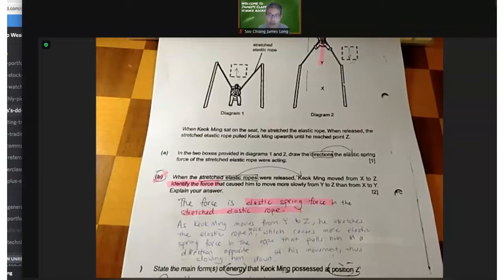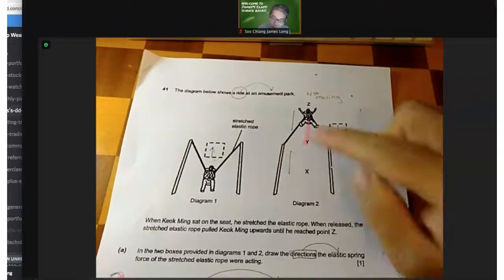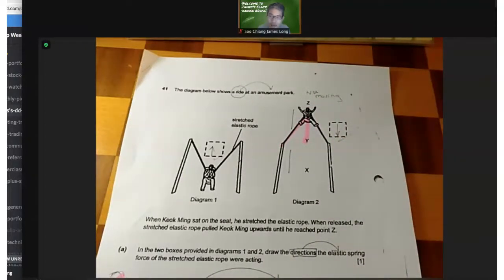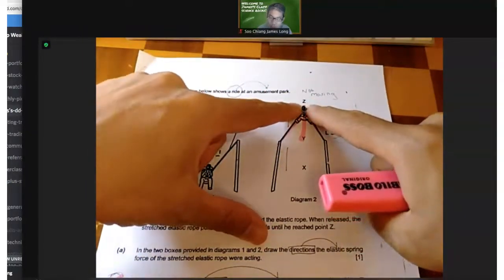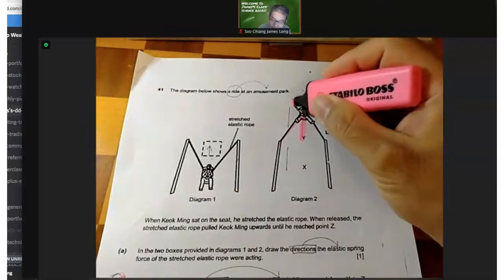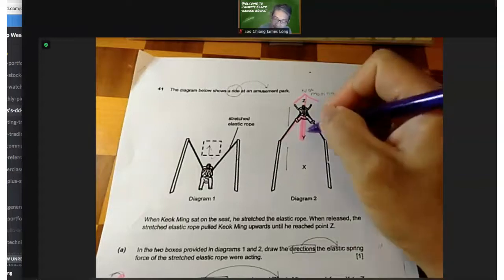Second part is explain the answer. Just like we talked about stretching a rubber band, the more you stretch it, the harder it is to stretch it further. Likewise, the more he goes up from Y to Z, the more he will be stretching this elastic rope. The harder it is to stretch it because there's greater elastic spring force in the elastic rope that will pull him back down.